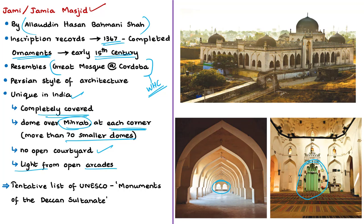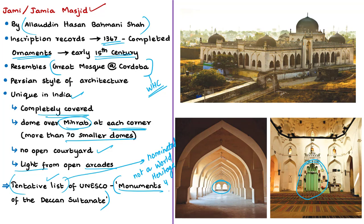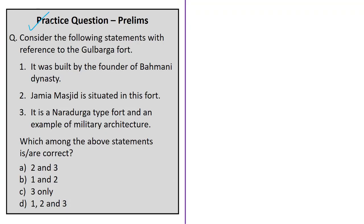The Gulbarga fort and the Jamiya Mosque are listed as one of the monuments under the Monuments of Deccan Sultanate, which is listed in the tentative list of UNESCO. A tentative list is an inventory of properties where the state party intends to consider nomination for UNESCO World Heritage status. Our country has nominated the Monuments of Deccan Sultanate, which includes the Gulbarga fort and the mosque. We can hope that in the future this site may be given World Heritage Site status, but currently it is only listed in the tentative list.